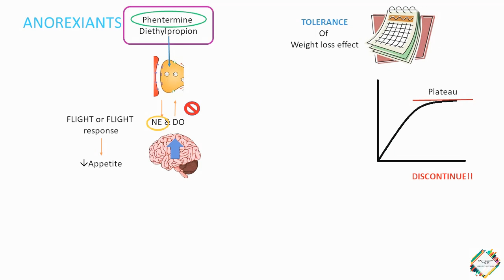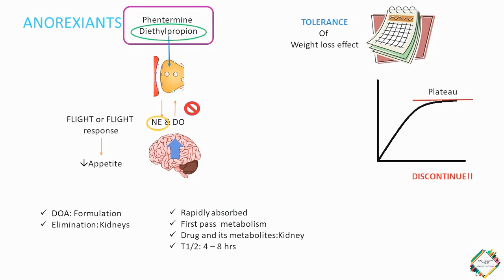Coming to the pharmacokinetics of these drugs, there is only limited information regarding the kinetics of Phentermine. The duration of activity is dependent on the formulation and the primary route of excretion is via the kidneys. Diethylpropion is rapidly absorbed and undergoes extensive first-pass metabolism. Many of the metabolites are active and these metabolites along with the parent compound are excreted mainly via the kidneys. The half-life of the metabolites is 4 to 8 hours.